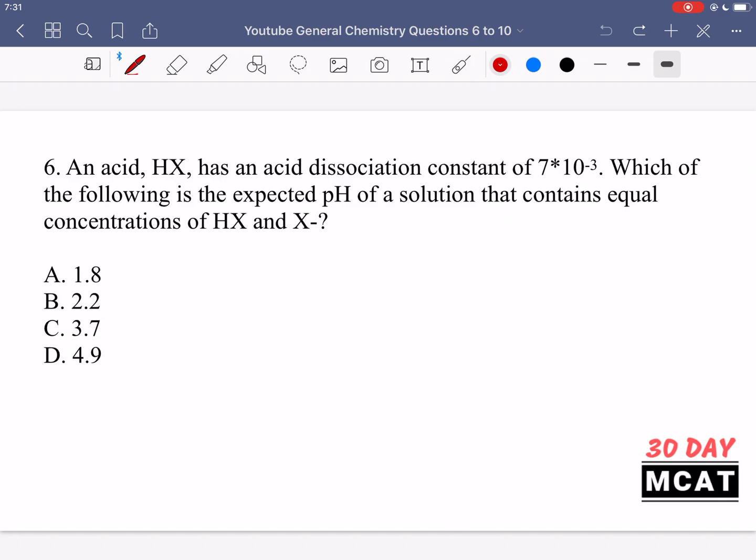Now let's go through the questions together. In question 6, it says an acid HX has an acid dissociation constant of 7 times 10 to the negative 3. Which of the following is the expected pH of a solution that contains equal concentrations of HX and X minus, which is its conjugate base? When we have equal concentrations of an acid and its conjugate base, that means we are at a pH that is equal to the pKa.